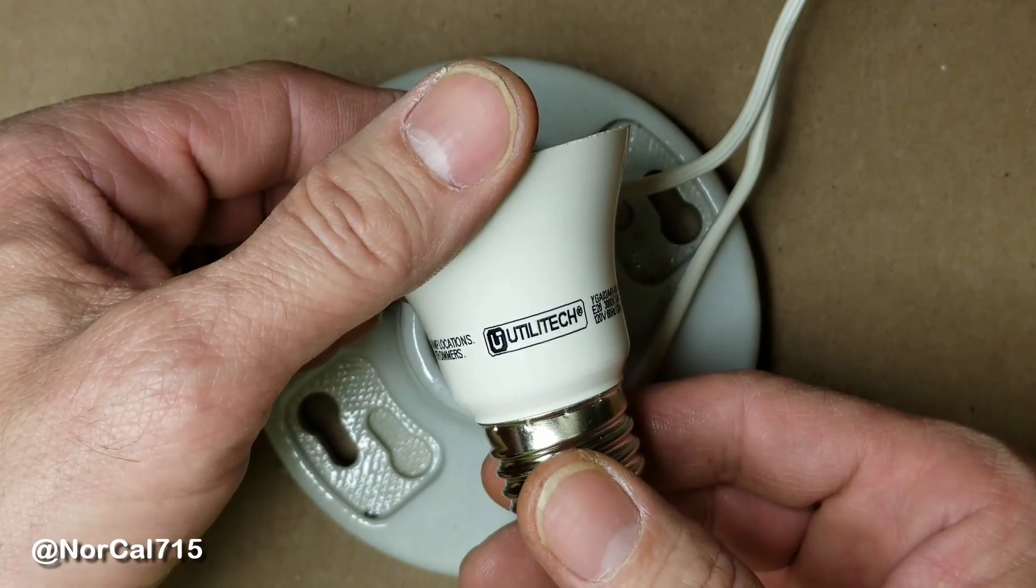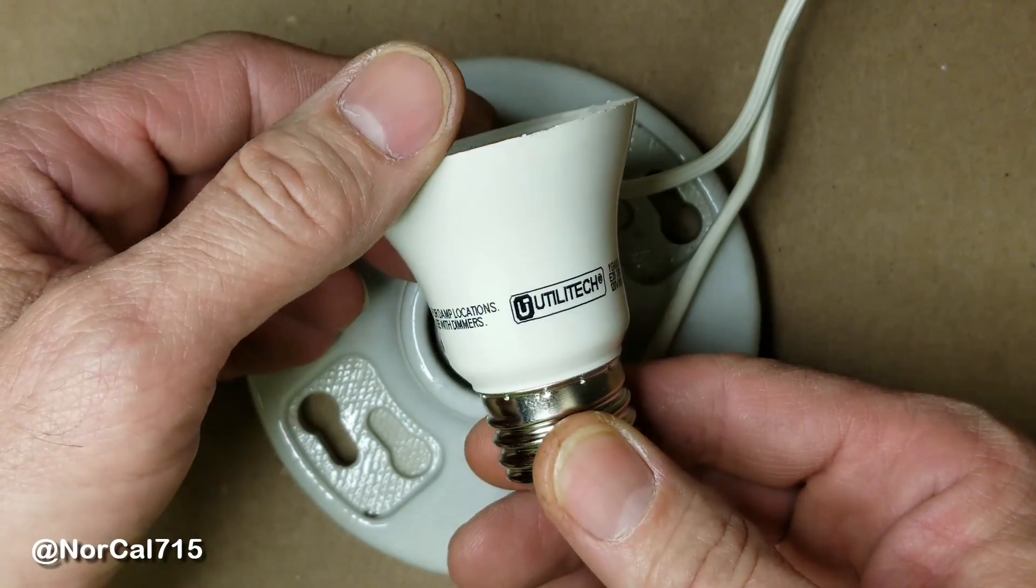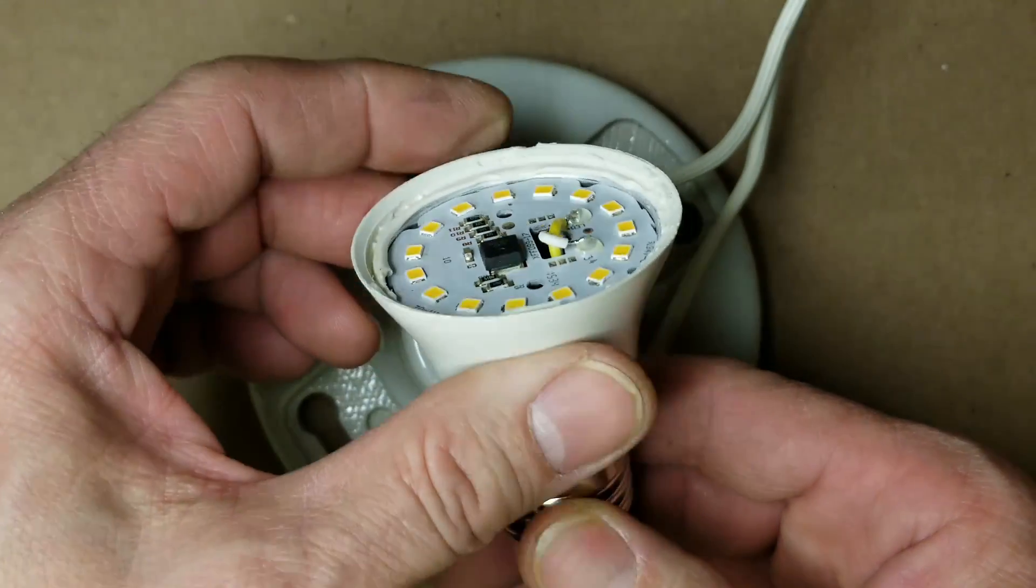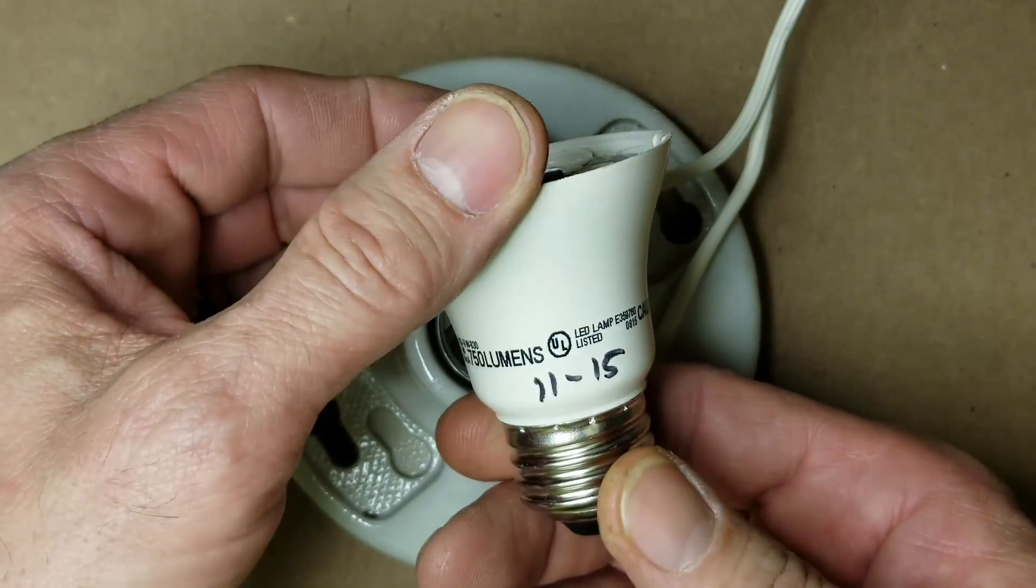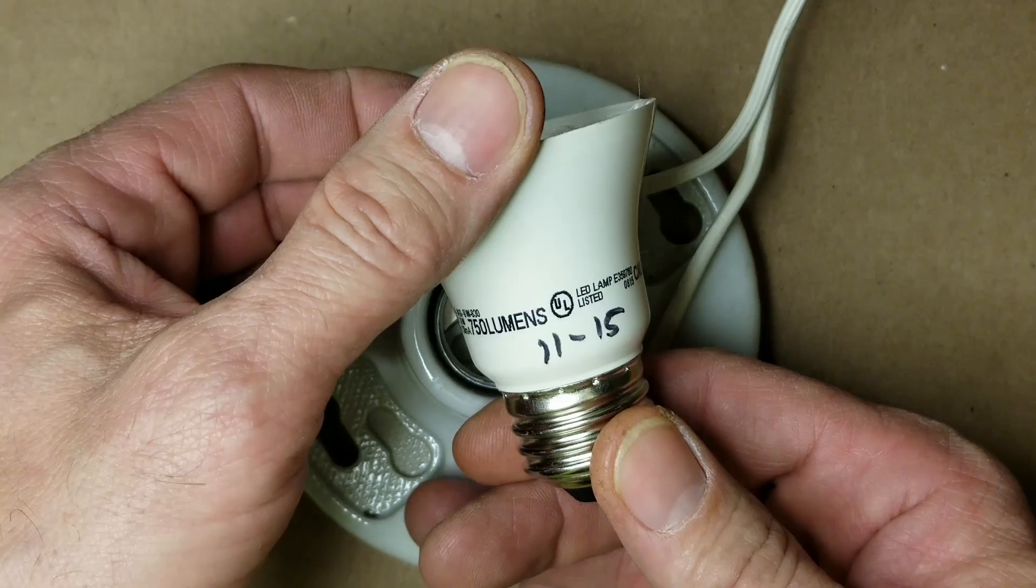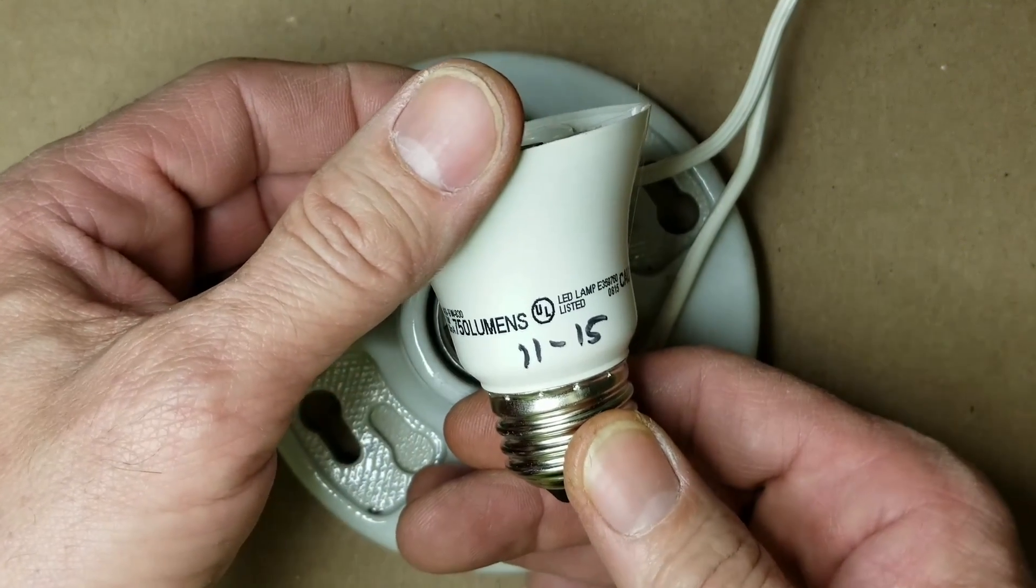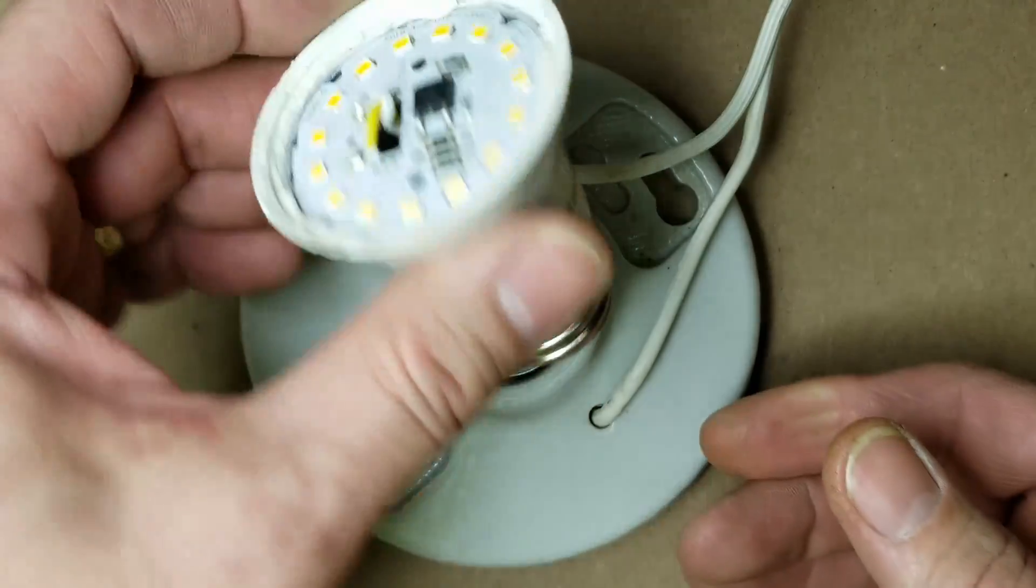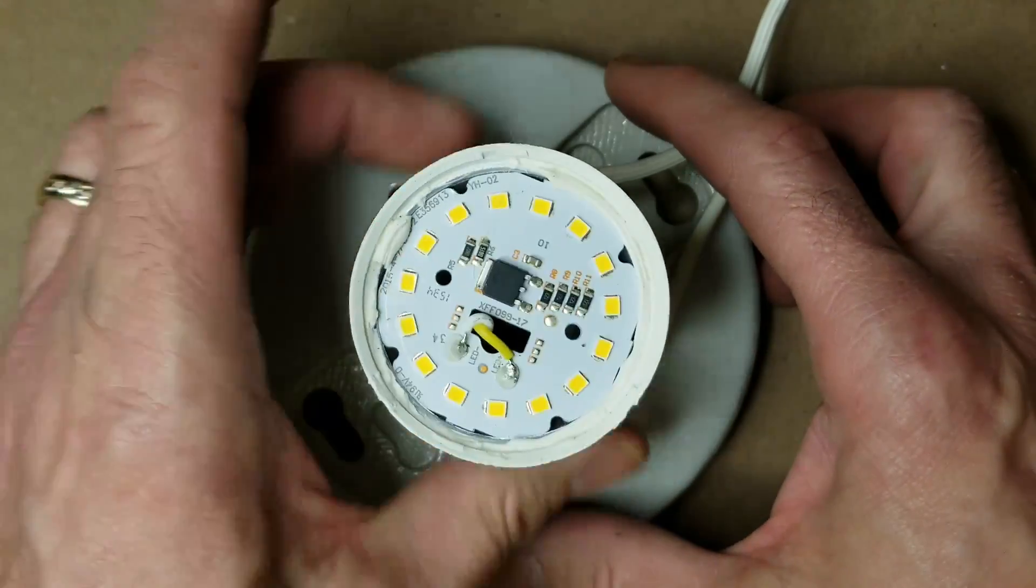Hello and welcome back to NorCal 715. I have this Utilitech LED light bulb. I've already taken the globe portion off of it. As you can see, I purchased it in November of 2015, Black Friday sale at Lowe's. I think they were going for 50 cents a piece at that time. Anyhow, let's screw it in here.